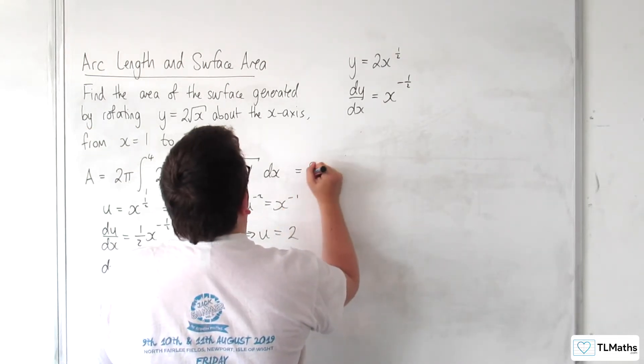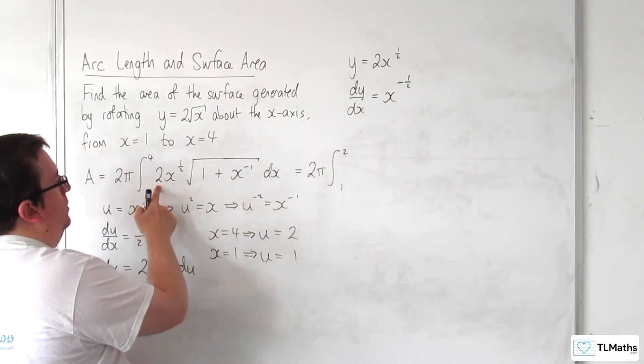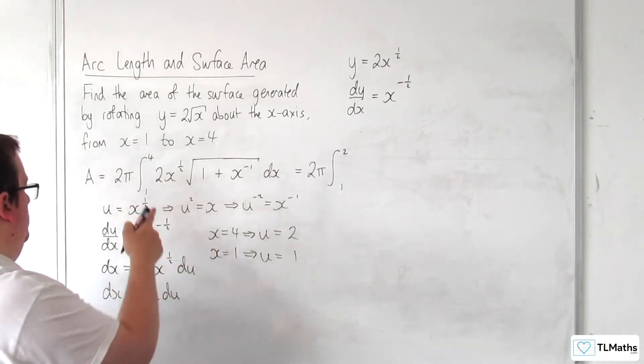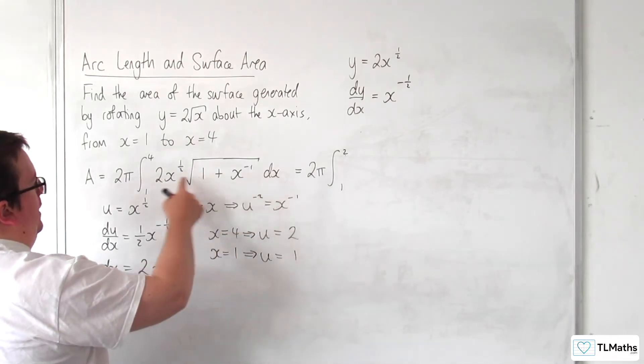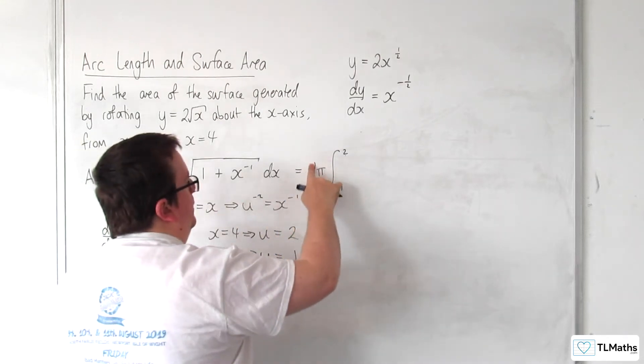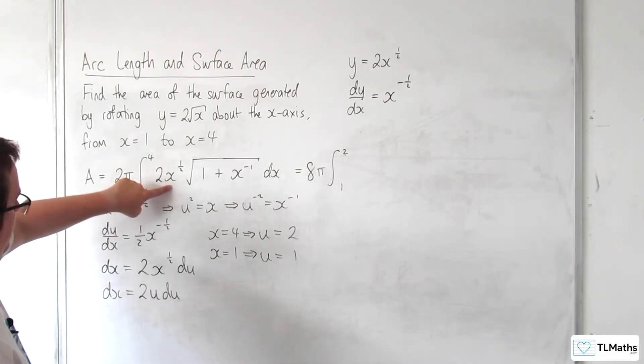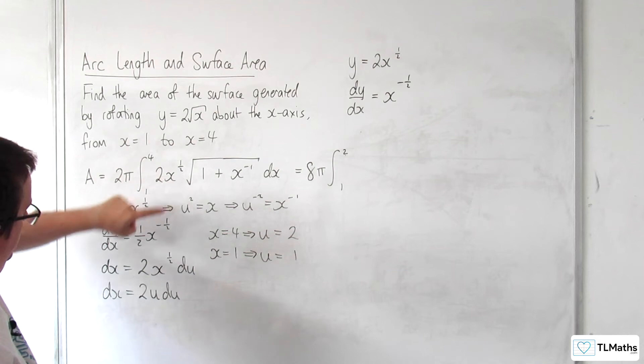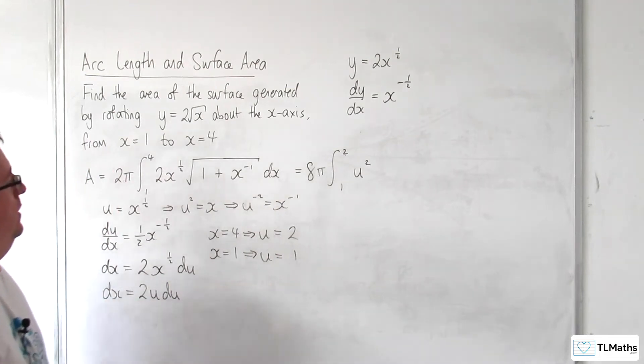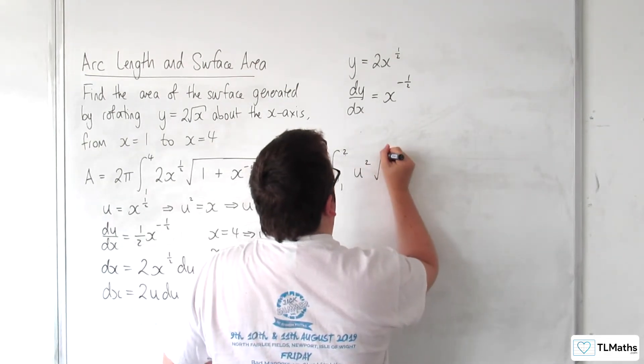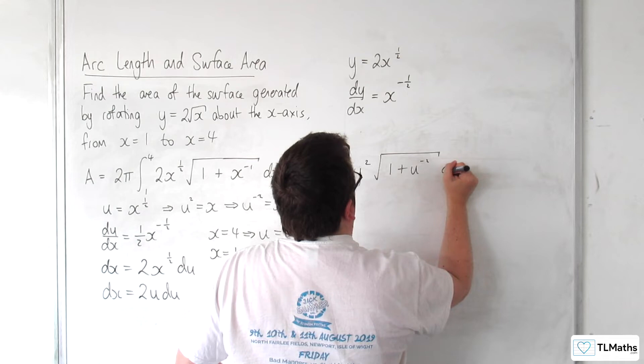We've got 2 pi times the integral between 1 and 2 of, well, let's bring that. The dx here has got 2u, so I can bring that 2 out and that 2, so that's 4, and multiply that with the 2 there. So let's have 8 there. We've got the x to the half, which is u, and I'm multiplying it with the u from there, so I'm going to have u squared out the front, and then I've got the square root of 1 plus u to the minus 2 du.